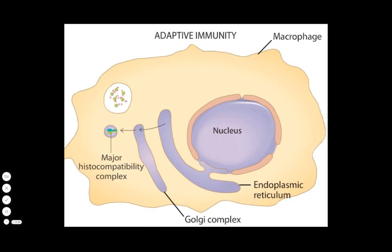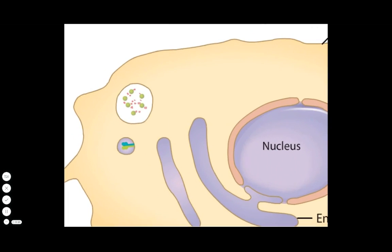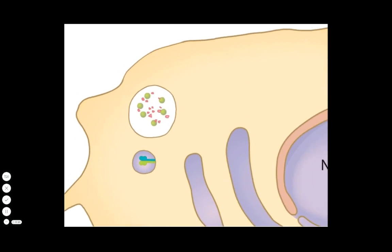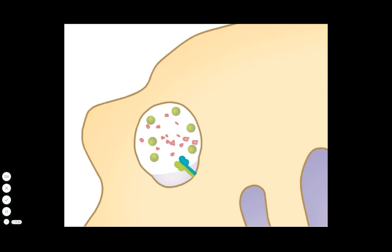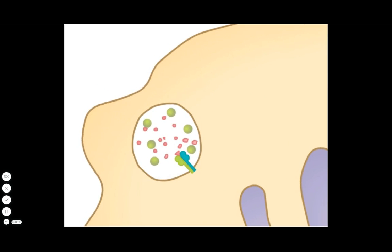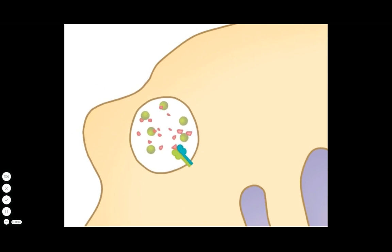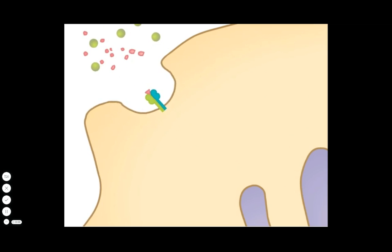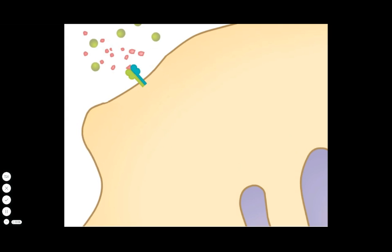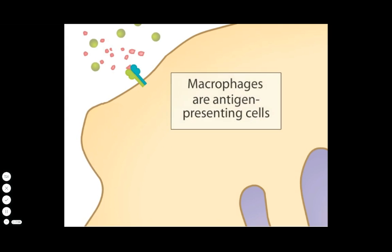Small bacterial peptides serve as antigens that can be placed on the major histocompatibility complex. The complex is then delivered to the cell surface, where other cells of the immune system can bind to the displayed antigen and become activated. Thus macrophages are considered antigen-presenting cells.